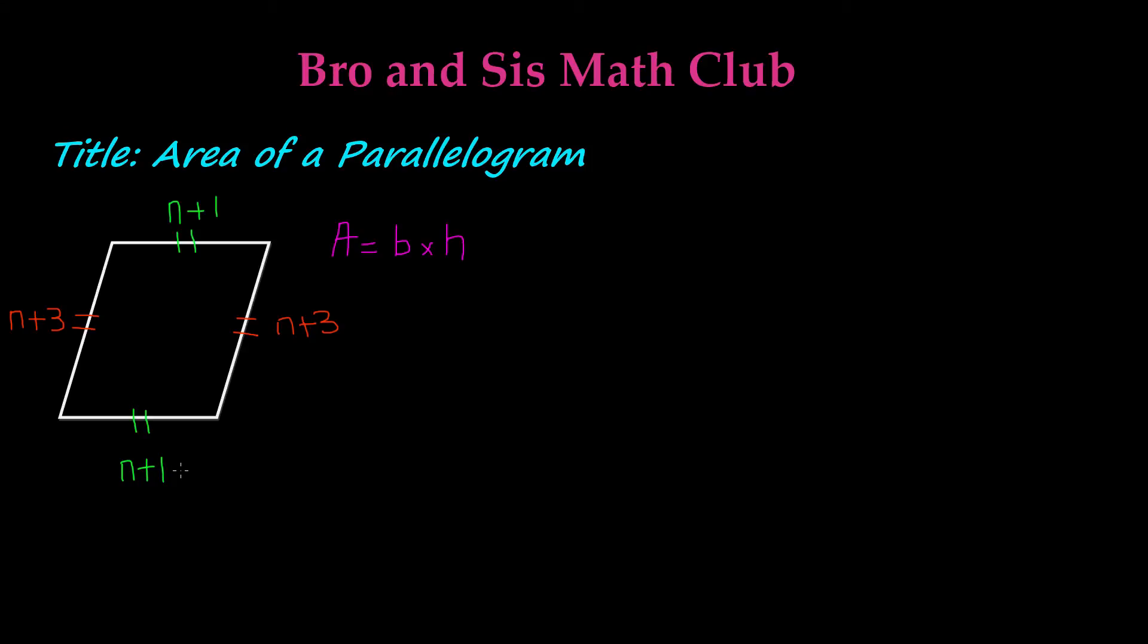So in order to find the area, we have to multiply the base, which is n plus 1, times the height, which is n plus 3. Let's go ahead and plug these values into our formula. So we have A, which is area, is equal to base, which is n plus 1, times the height, which is n plus 3.